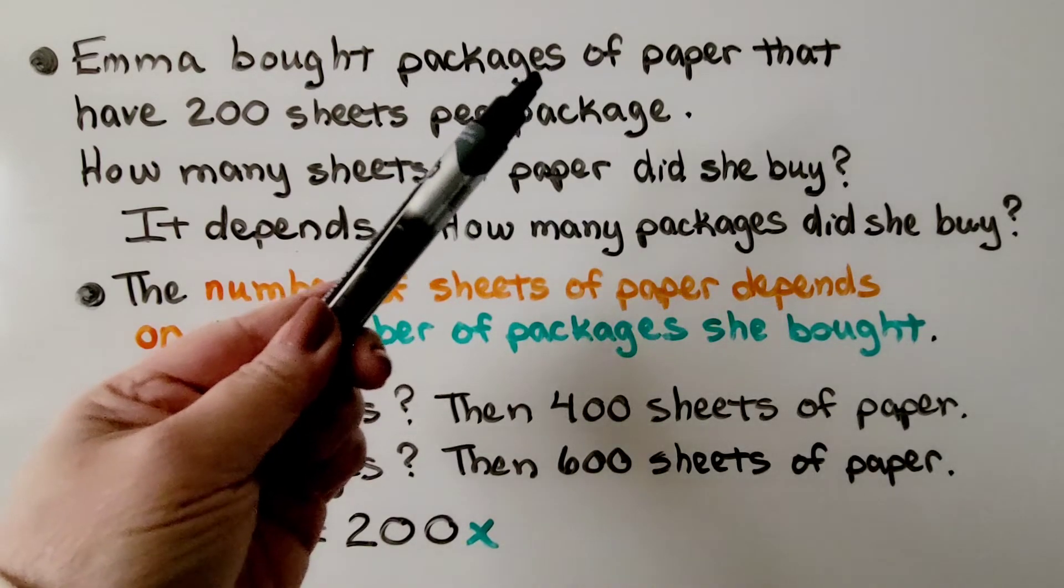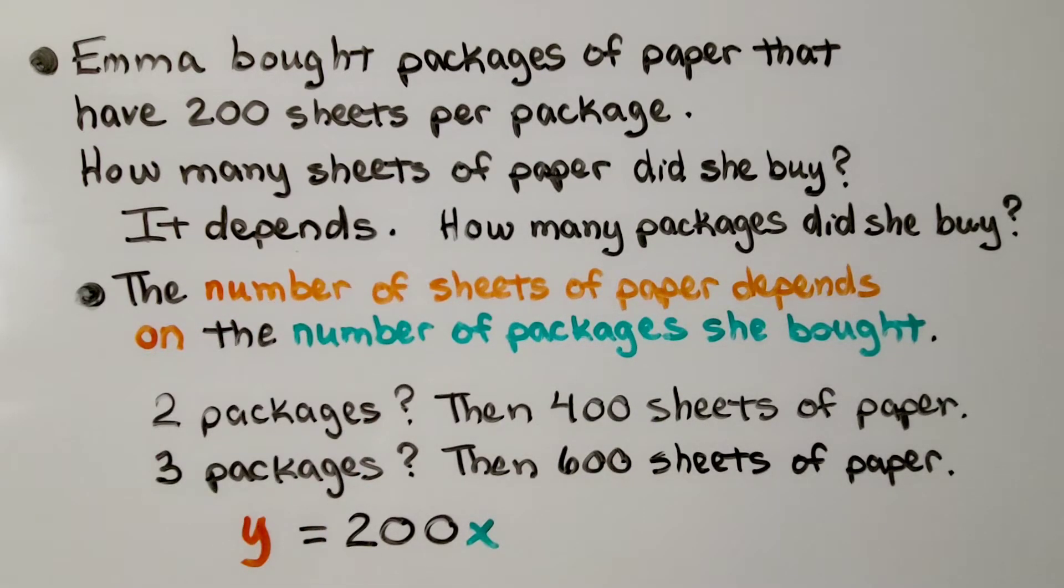It says packages, so we know she bought more than one package. Did she buy 2 packages? Then there's 400 sheets of paper. Did she buy 3 packages? Then there's 600 sheets of paper because y depends on the number of packages she bought. y = 200x.